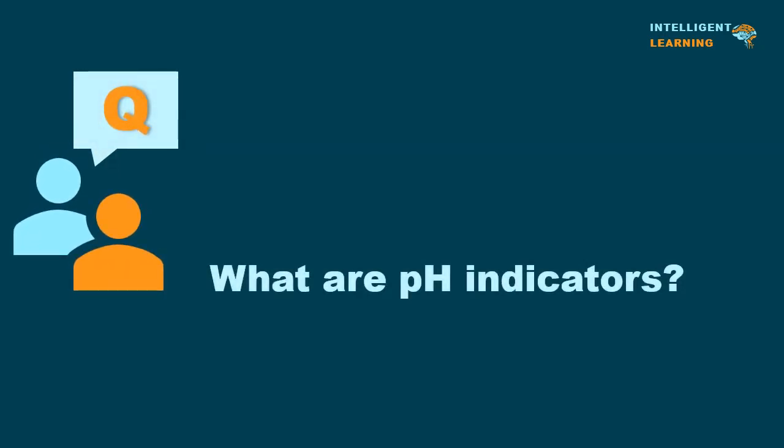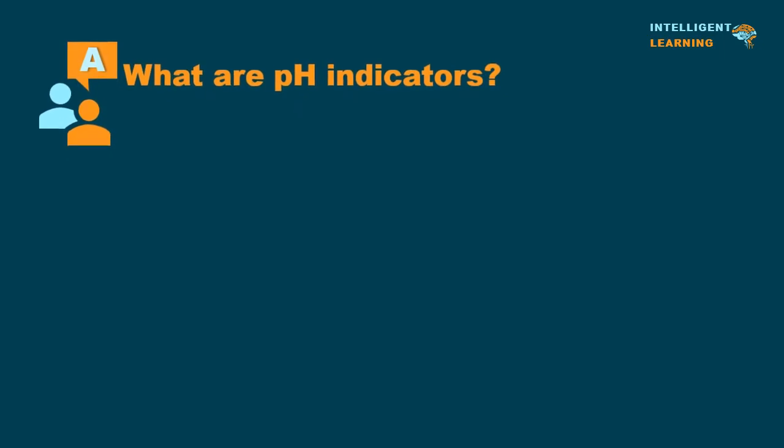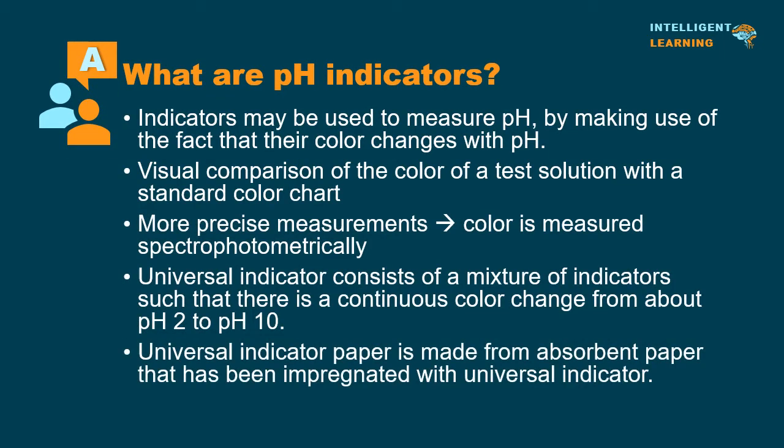What are pH indicators? Indicators may be used to measure pH by making use of the fact that their color changes with pH. Visual comparison of the color of a test solution with a standard color chart provides a means to measure pH accurate to the nearest whole number. More precise measurements are possible if the color is measured spectrophotometrically, using a colorimeter or spectrophotometer. Universal indicator consists of a mixture of indicators such that there is a continuous color change from about pH 2 to pH 10. Universal indicator paper is made from absorbent paper impregnated with universal indicator.